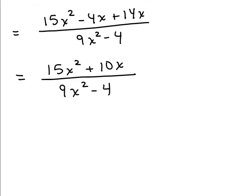We need to factor the numerator and the denominator. So in the numerator, you look for a common factor first, right? And the common factor here is 5x, that's the greatest common factor. So we have 5x times 3x plus 2, right?